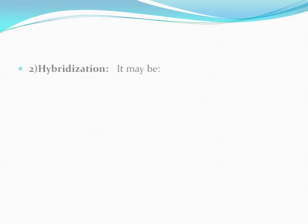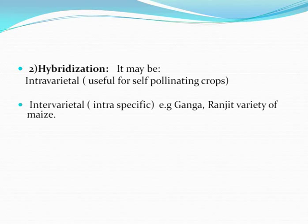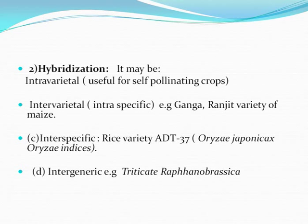Hybridization may be intra-varietal, which is useful for self-pollinating crops, or inter-varietal (intra-specific) — examples are the Ganga and Ranjit varieties of maize. Inter-specific hybridization examples include the rice variety ADT-37, Oryza japonica and Oryza indica. Inter-generic hybridization includes triticale and raphanobrassica. No new characters are created by hybridization.